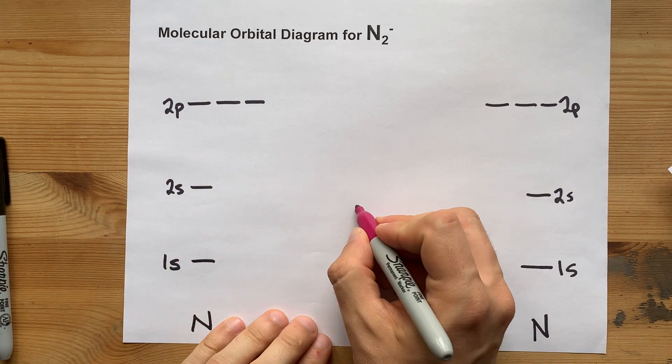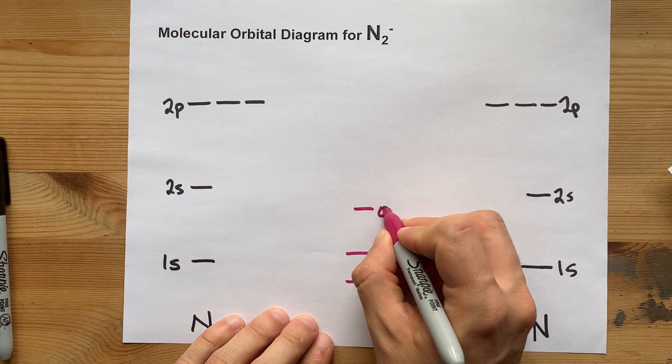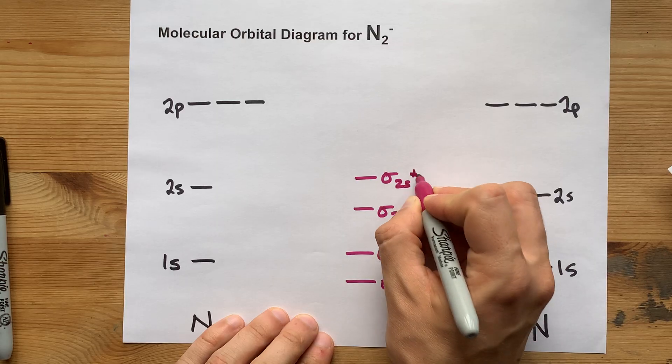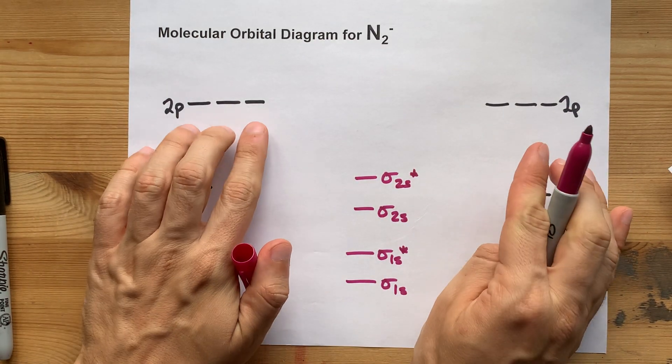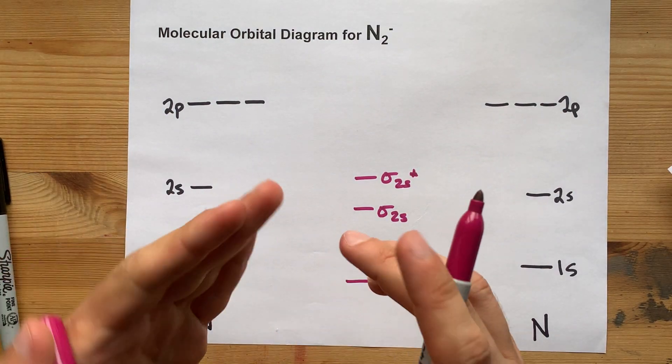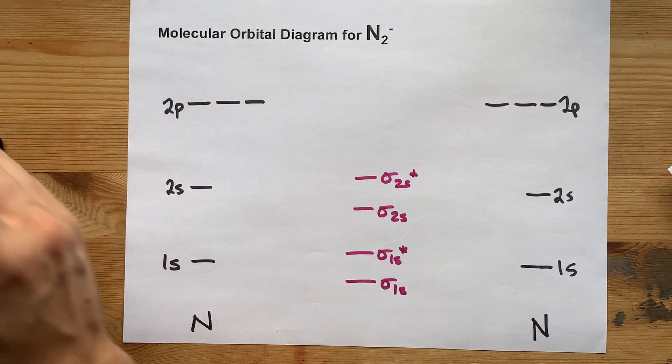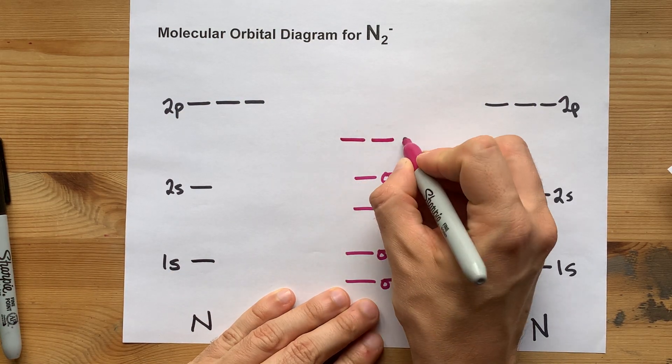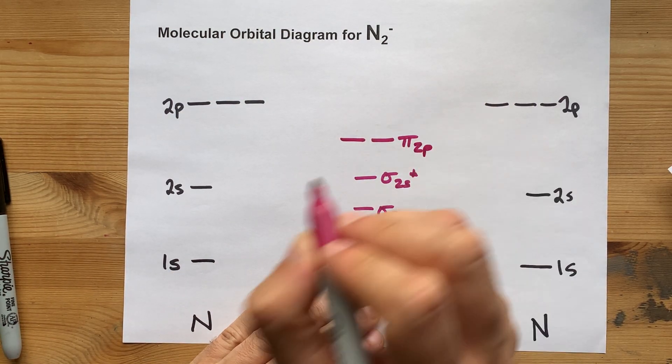Now, I want you to be careful about the overlap between the 2p orbitals. For nitrogen and earlier, the lowest energy molecular orbitals are the pi 2p bonding orbitals.